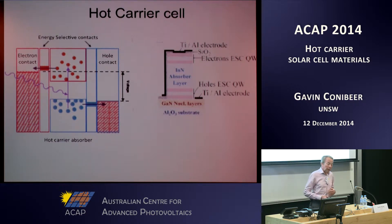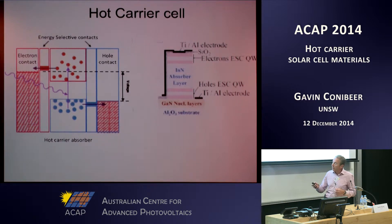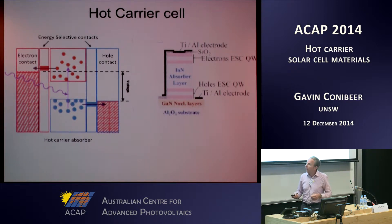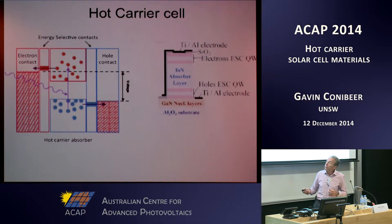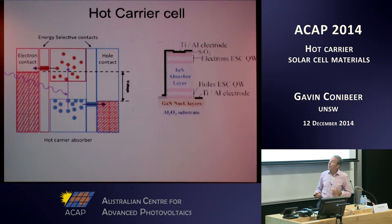The hot carrier cell is a device which has a very narrow electronic bandgap. The idea is to absorb a wide range of photon energies across that bandgap, but then to keep the carriers very hot through some means and extract those carriers before they can thermalise into the external circuit. So you extract at a high voltage or high energy, both electrons and holes, getting a high voltage in the external circuit, and also hopefully a high current if these carriers can remain hot, because they've got a narrow bandgap for absorption.